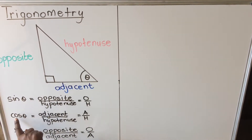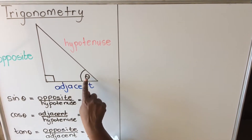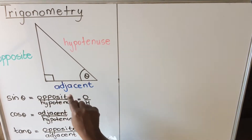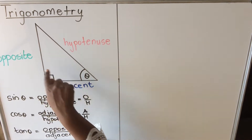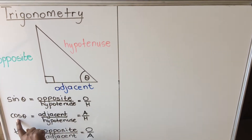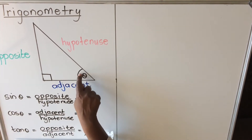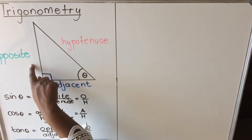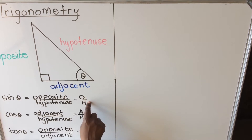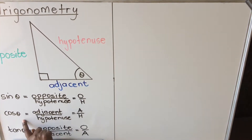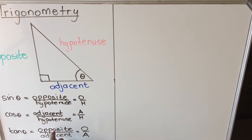There are three trig ratios, each going with an angle: sine theta, cos theta, and tan theta. The ratios are defined relative to a particular angle. Sine theta equals opposite over hypotenuse, which we represent as O over H. Cos theta equals adjacent over hypotenuse, and tan theta equals opposite over adjacent.